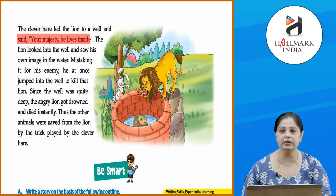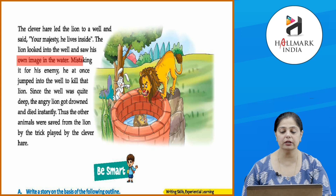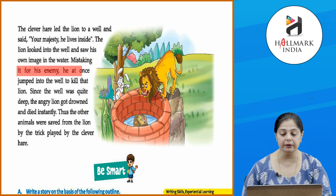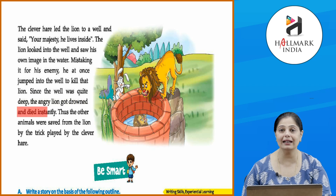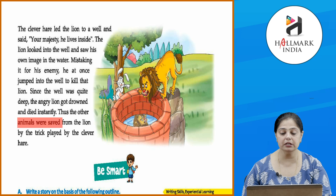The clever hare led the lion to a well and said, 'Your Majesty, he lives inside.' The lion looked into the well and saw his own image in the water, mistaking it for his enemy. He at once jumped into the well to kill that lion. Since the well was quite deep, the angry lion got drowned and died instantly. Thus the other animals were saved from the lion by the trick played by the clever hare.